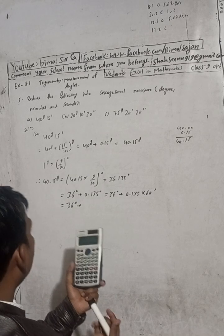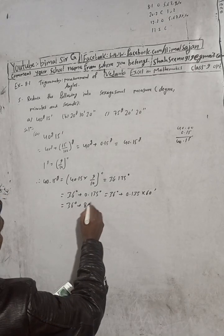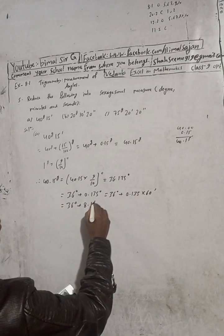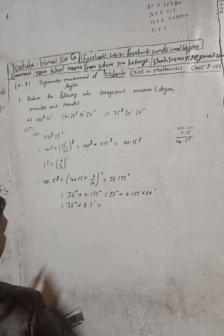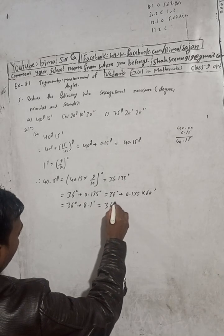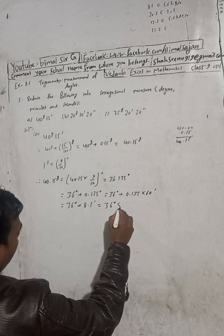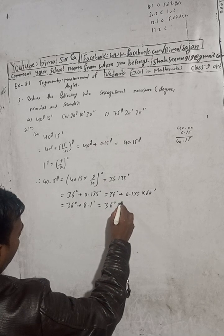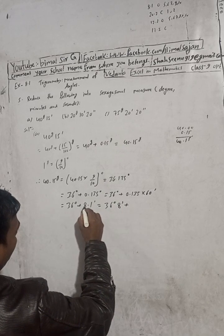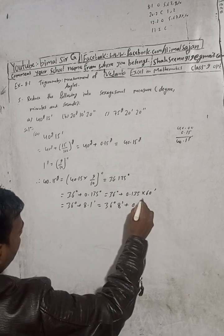Now 0.135 — how many minutes are you? 36 degrees plus 0.135 — we multiply 0.135 by 60 to get minutes, which gives us 8.1 minutes.